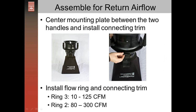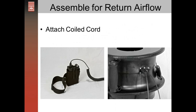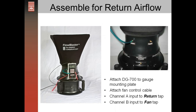When measuring return flow, the flow rings will go on the top, and you use the connecting trim to attach either ring two or ring three. Then attach the coil cord to the battery speed controller and connect the other end to the fan. Attach the gauge to the gauge board, then connect the tubing: on channel A, the input goes from channel A to the return tap on the Flow Blaster housing. The return tap goes to the return flow sensor, which points in the direction of airflow when measuring returns.